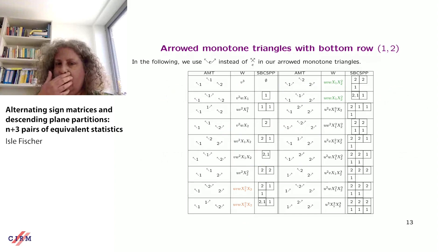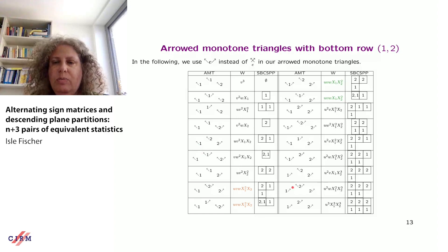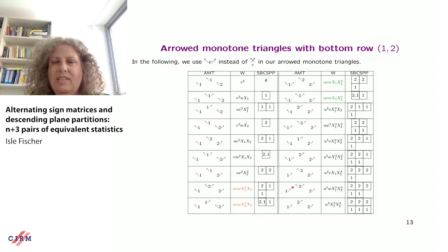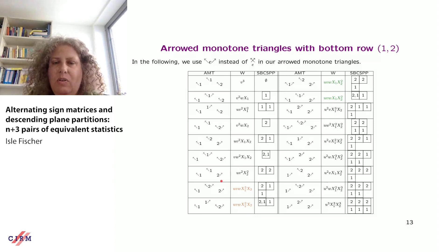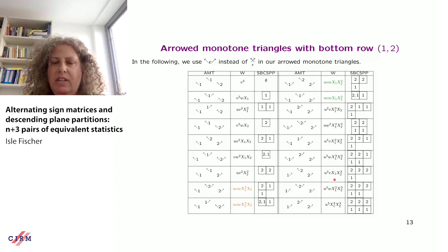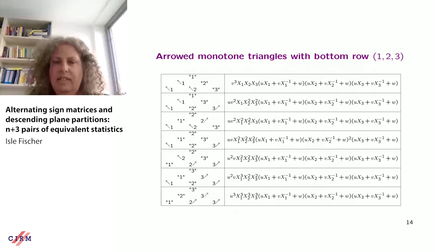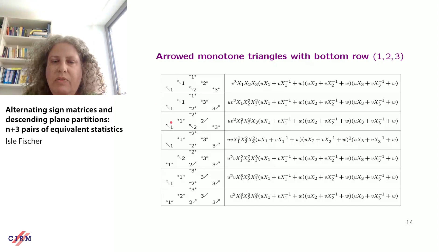Now the case n=2 gives a small example: there are only two monotone triangles with bottom row 1,2 but many more arrowed monotone triangles due to the arrows. I've written down the weights for the arrowed monotone triangle side in the second and fifth columns. The other columns will correspond to the plane partition objects, which I haven't defined yet.